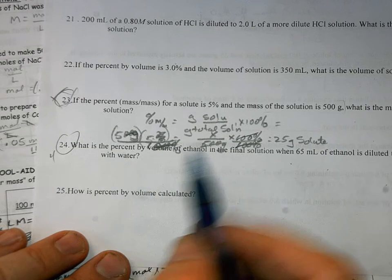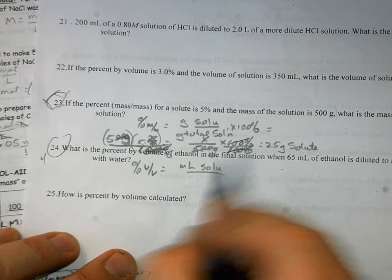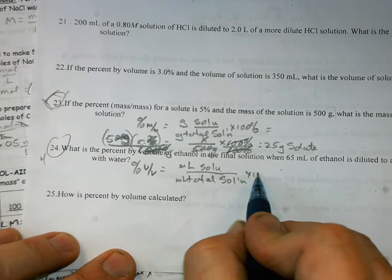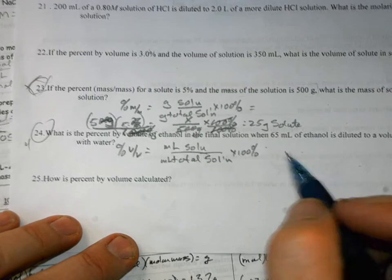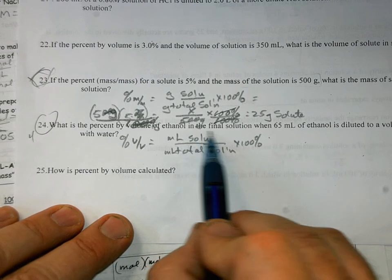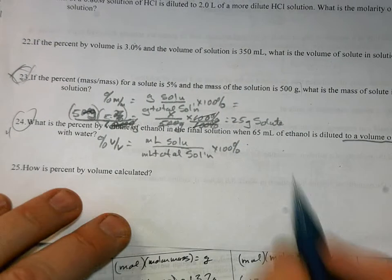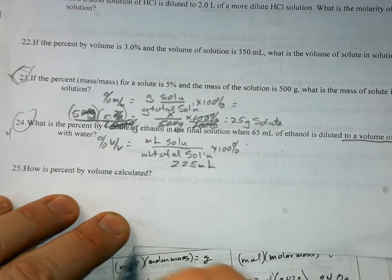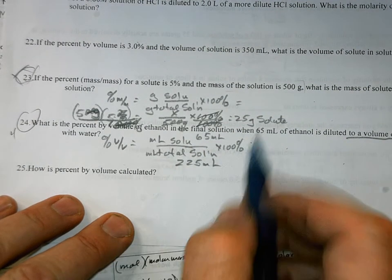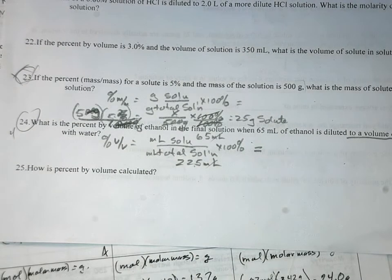Percent by volume is going to be milliliters of solute solution divided by total solution, milliliters of total solution. And I'm abbreviating that. Times 100%. Don't forget that. Some of you try to do that in your head, you're going to make a mistake. So what are we looking for in this problem? What is the percent by volume of ethanol when the final solution, when 65 milliliters of ethanol is diluted to a volume? So they're telling you in this problem the total volume is going to be 225 milliliters. You've got to read these carefully. You've got 65 milliliters of ethanol solution. So now to solve this, it's going to be 65 divided by 225. The milliliters will cancel. And then you're going to multiply by 100.